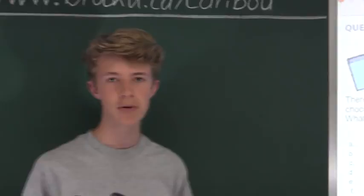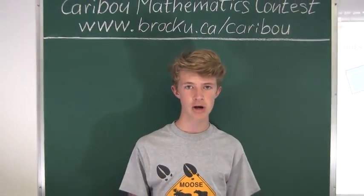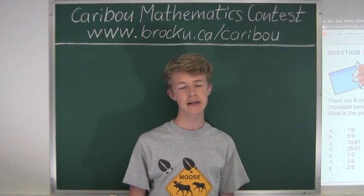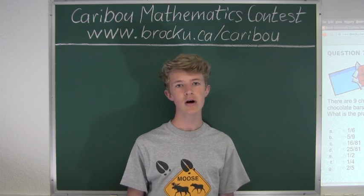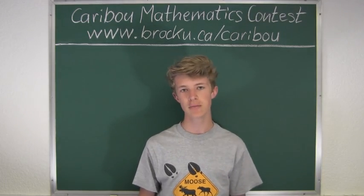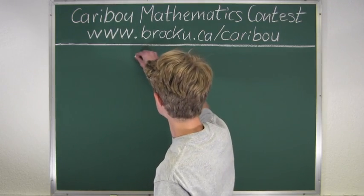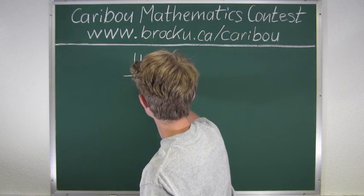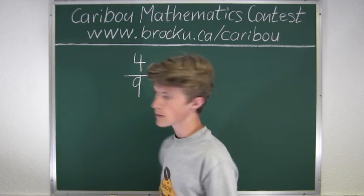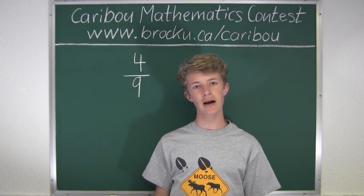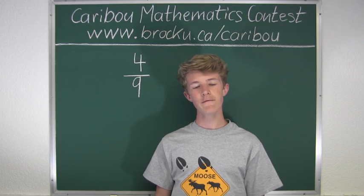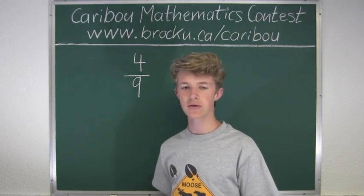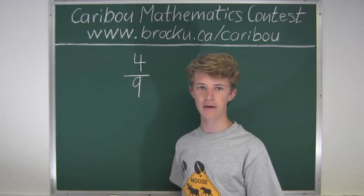The probability of picking an unbroken chocolate bar first would be 4 out of 9, because there are 9 chocolate bars in total, of which 4 are unbroken and 5 are broken. After this pick, there are 8 chocolate bars left, of which 3 would then be unbroken. So the probability of the second pick would be 3 out of 8.